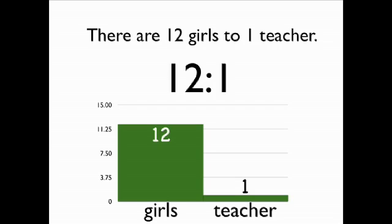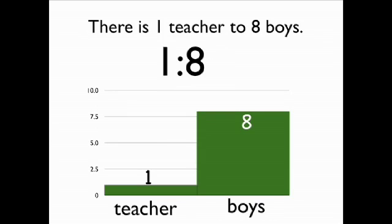There are also 12 girls to the one teacher. The ratio is 12 to 1. The left bar represents the 12 girls, while the right bar represents the one teacher. There is one teacher to 8 boys. The ratio is 1 to 8. On the left is the one teacher, and on the right is the 8 boys.